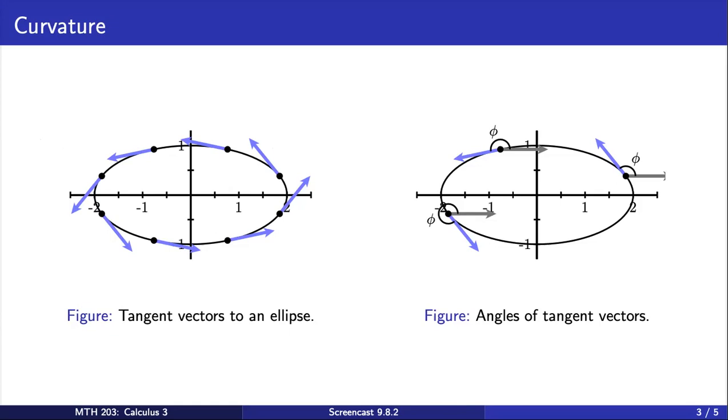To measure the curvature, we first need to describe the direction of the curve at a point. We may do this using a continuously varying tangent vector to the curve, as shown on the left in the figure here. The direction of the curve is then determined by the angle phi each tangent vector makes with a horizontal vector, as shown on the right side.